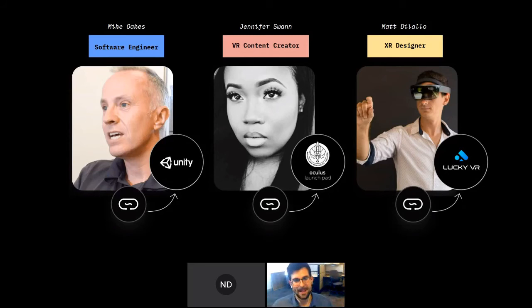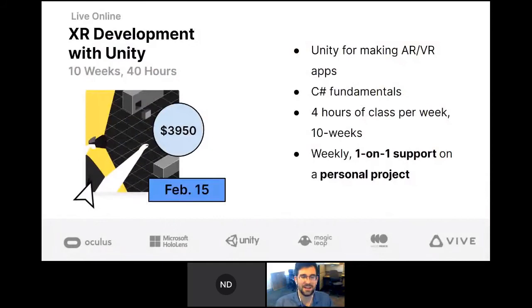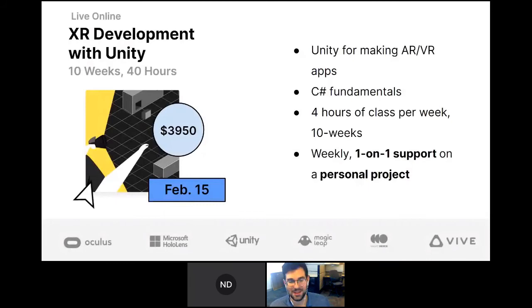Others have gone on to create their own businesses — Matt DiLallo took our course and started his own company LuckyVR working with VR and AR technologies. Most of these people went through our XR Development with Unity course: ten weeks, live and online, four hours per week — three hours in class across two one-and-a-half-hour sessions, plus a one-hour private weekly one-on-one session to help build your own ideas and projects for your portfolio.